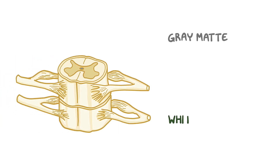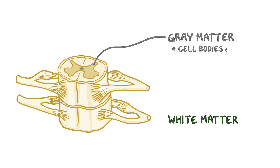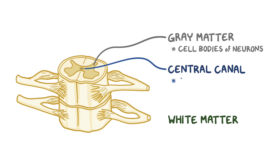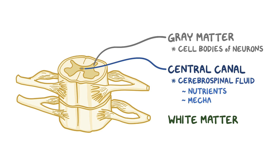The spinal cord itself is composed of both gray and white matter. Gray matter is found within the medial portion of the spinal cord and is shaped like a butterfly. This is where the cell bodies of different neurons can be found. In the center of the gray matter, there is a small cavity called the central canal, which is filled with cerebrospinal fluid. Cerebrospinal fluid helps provide nutrients and mechanical support to the brain and spinal cord.